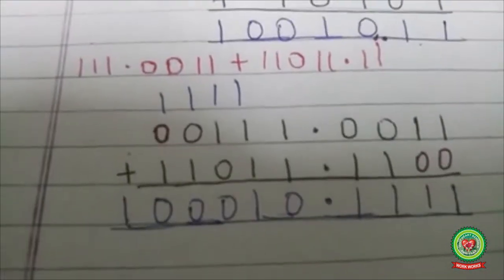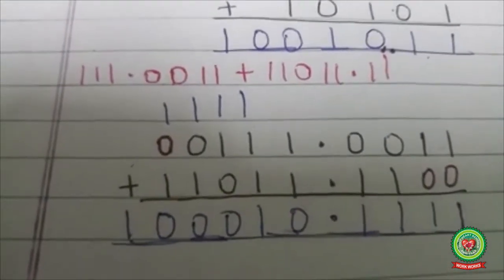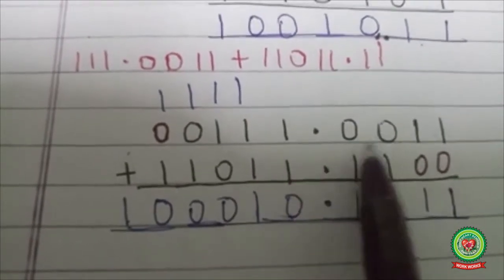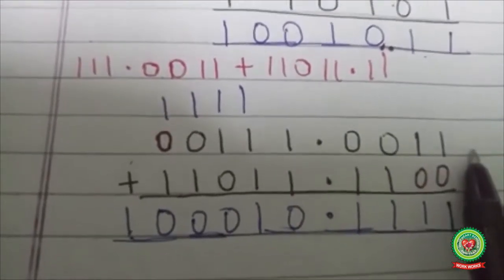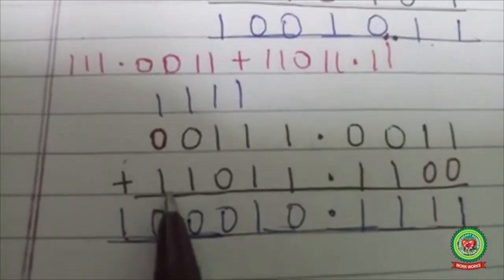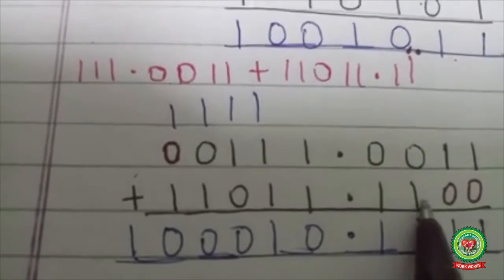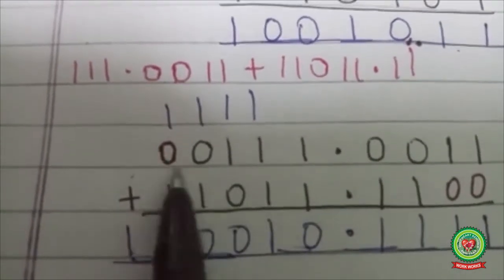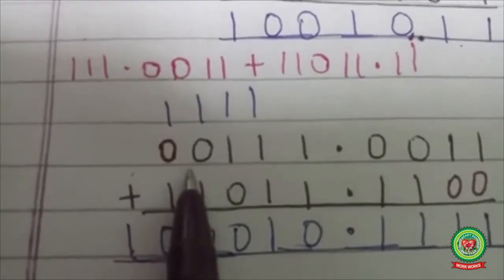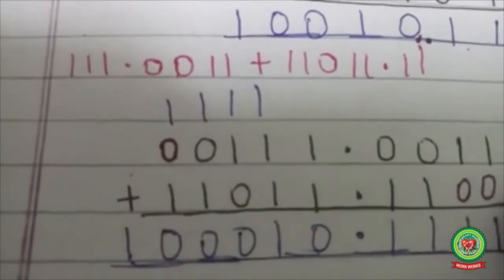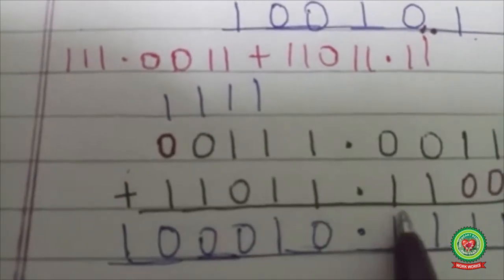You are going to start the addition from the fractional part without disturbing the position of the point. Let's do an example: 111.0011 plus 11011.11. These empty spaces are filled with zeros to make the numbers equal.